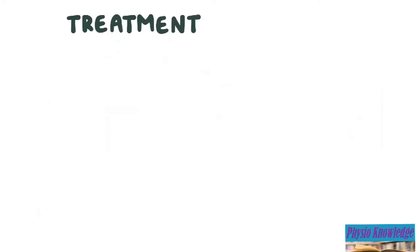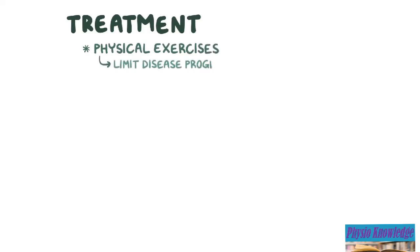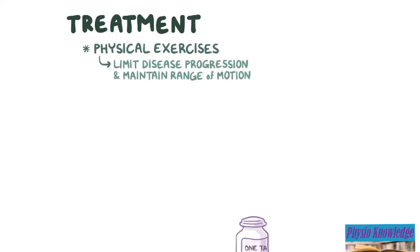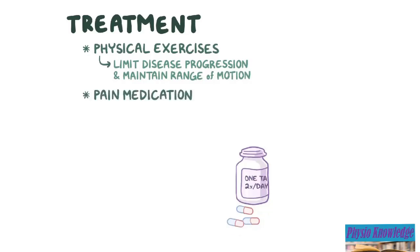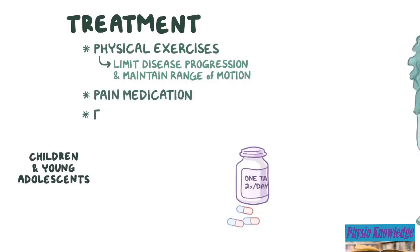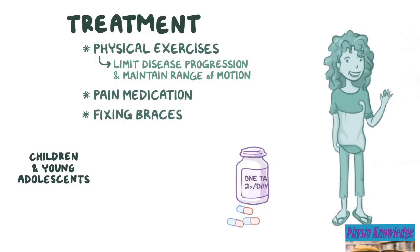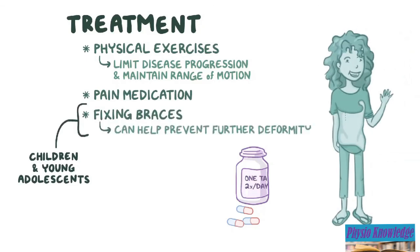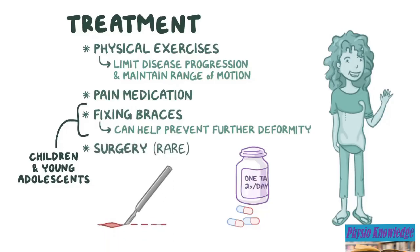Treatment of lordosis, kyphosis, and scoliosis typically includes physical exercises to limit the disease progression and maintain the range of motion, as well as pain medication when it's needed. For children and young adolescents, fixing braces can sometimes help prevent further spinal deformity. In rare situations, surgery may be needed.